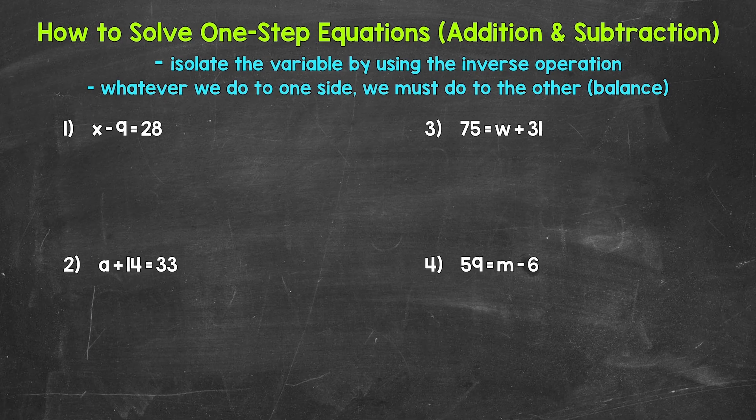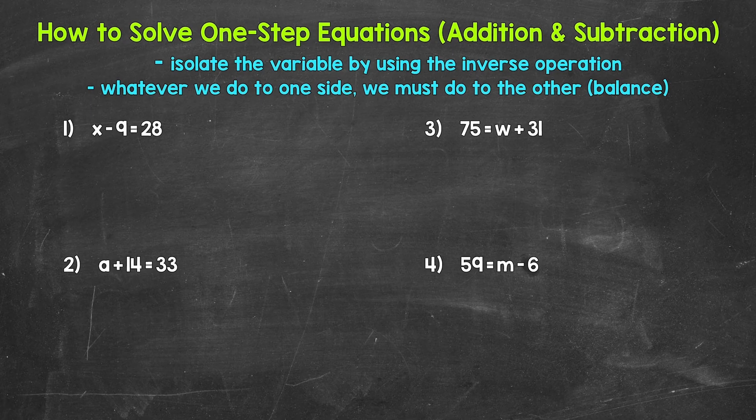Let's jump into our addition and subtraction examples, starting with number one, where we have x minus 9 equals 28. So we need to solve this equation — we need to figure out what x equals. So what minus 9 equals 28? For this example, we may be able to figure it out using mental math, but it's going to be helpful to go through the process of isolating the variable, so that we're prepared for more difficult or more complex equations. Now, we are subtracting 9 from x. We need to undo that subtraction by using the inverse operation.